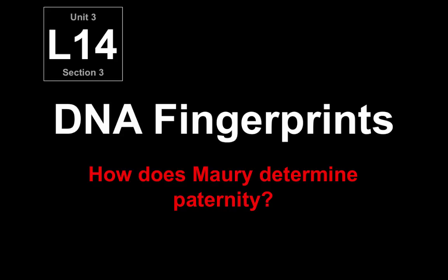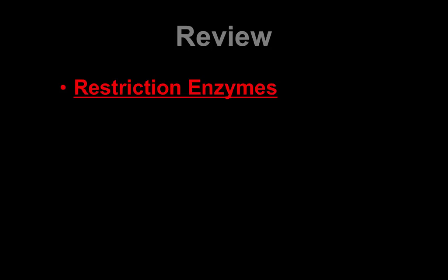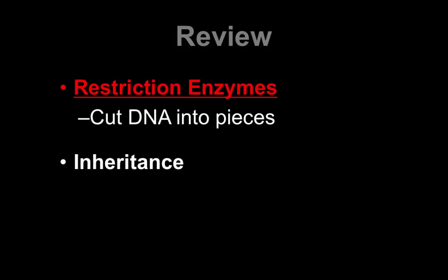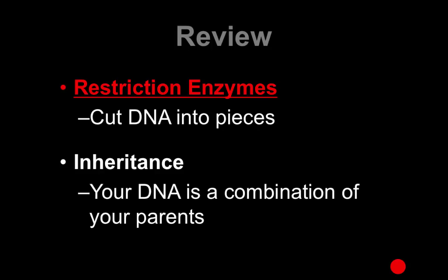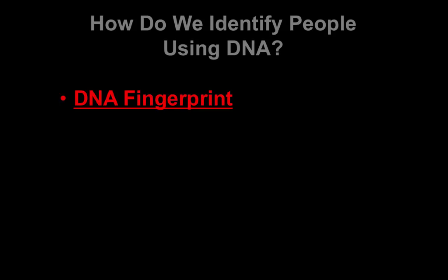In this lesson, we're going to look at DNA fingerprints and how Maury, on the Maury Show, actually determines paternity. As a review, remember, restriction enzymes cut DNA into pieces. And when we're talking about inheritance, your DNA is a combination of your parents — half from mom and half from dad. So when we're trying to identify people using DNA, like on CSI or The Maury Show, we're going to use what's called a DNA fingerprint.